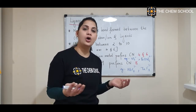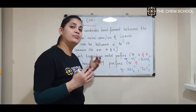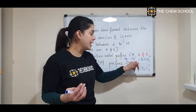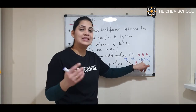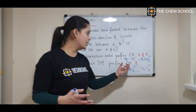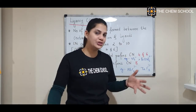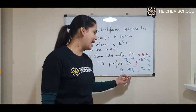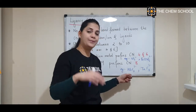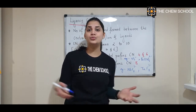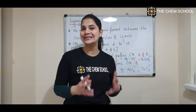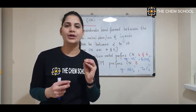The lighter transition metals prefer a coordination number of 4 and 6. For example, vanadium forms 6 coordinate bonds with fluorine, and Fe in [Fe(CN)₆] forms 6 coordinate bonds with cyanide. The heavier transition metals prefer a coordination number of 8. For instance, niobium and tantalum — which are lower in the periodic table — show a coordination number of 8, and osmium also shows a coordination number of 8.